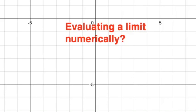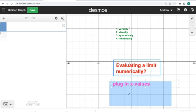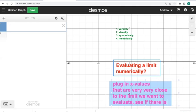What we would do when we evaluate a limit numerically is we would make a table of values and plug in x values that are very, very close to the limit we want to evaluate. See if there's a trend in the outputs.